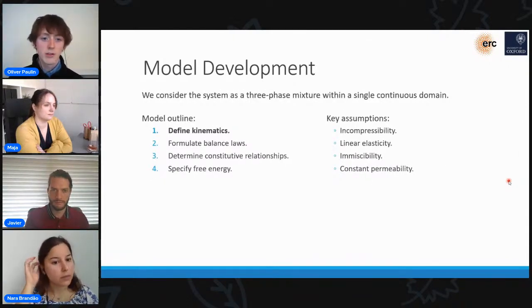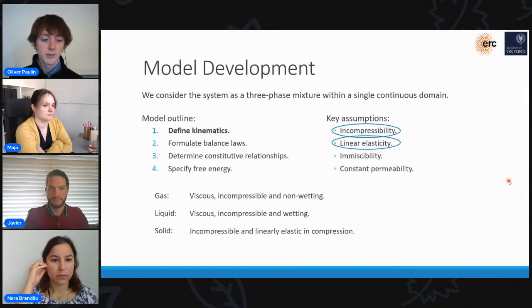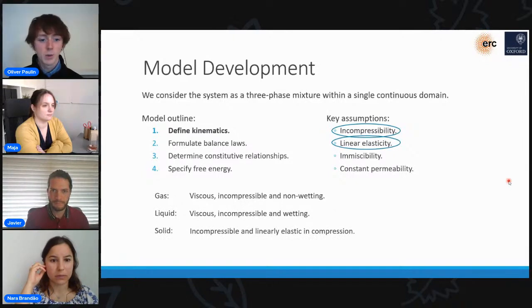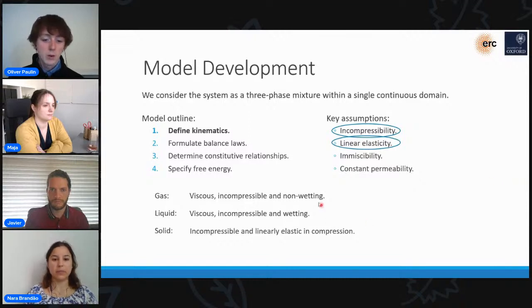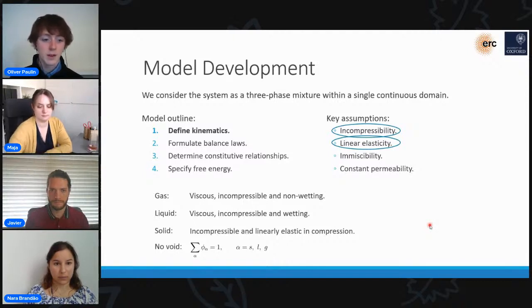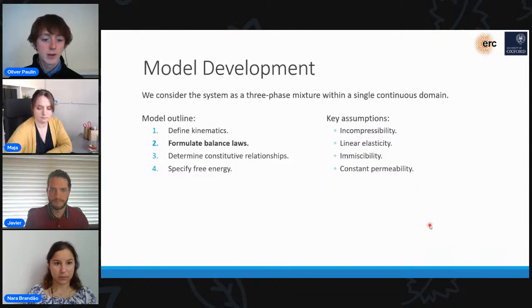So essentially we consider the system as being a three-phase mixture consisting of gas, liquid and solid. We model the gas and liquid phases as being viscous incompressible fluids, with the gas being the non-wetting fluid and the liquid being the wetting fluid. For the solid phase we also assume that it's locally incompressible and that it's linearly elastic when in compression. When it's in tension, however, because we're considering non-cohesive granular materials, we assume there's no resistance to this. We quantify the presence of these different phases through the use of the relative volume fraction, phi. And these three volume fractions, the gas, liquid and solid, all just sum up to one.